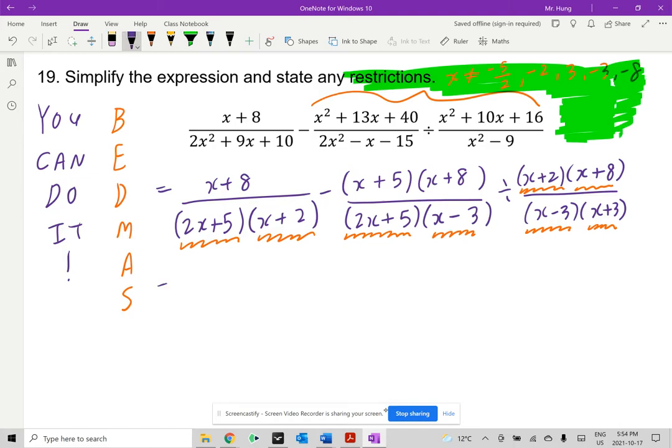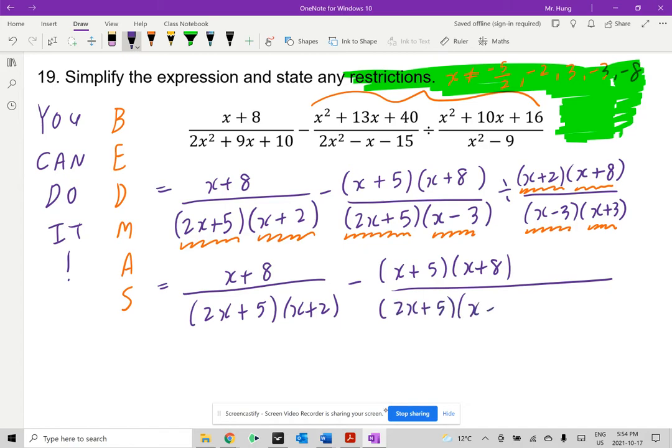Now I'm going to go back. I'm going to copy x plus 8 divided by 2x plus 5 times x plus 2. Now remember, your goal is to follow BEDMAS, so I am going to copy the second fraction, x plus 5, x plus 8, divided by 2x plus 5, times x minus 3, and I'm going to multiply by the reciprocal. So this is going to be x minus 3, x plus 3 in the numerator, and in the denominator, x plus 2, x plus 8. When you're dividing by a fraction, you're multiplying by the reciprocal of that same fraction.